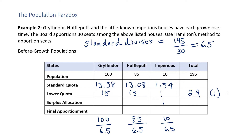We have one more seat to allocate, and it goes to the house with the highest residual on the standard quota — that turns out to be Imperius. So the final apportionment: Gryffindor gets 15, Hufflepuff gets 13, and Imperius gets 2, for a total of 30, our desired amount.